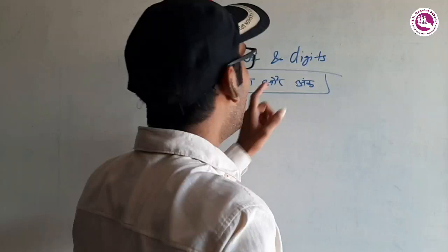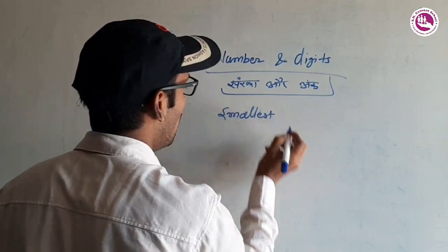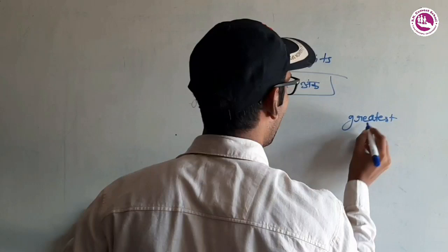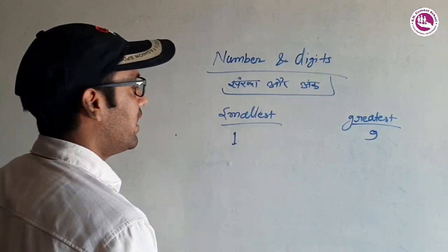Any number — koi bhi sankhya — kitne ank hai, yeh jaanenge. Numbers have smallest and greatest values. The smallest one-digit number is one, and the greatest one-digit number is nine. This is one digit.